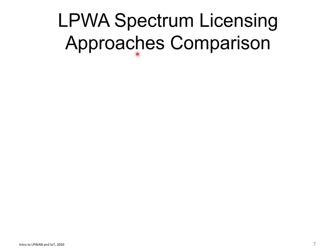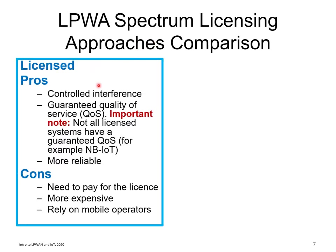What are the main differences between licensed and unlicensed band approaches? For licensed spectrum, the key advantage is controlled interference — interference being the most impeding factor in wireless telecommunications. You have a guaranteed quality of service, for example in LTE. It is more reliable because you have dedicated, exclusive spectrum access. The cons: operators must pay for the license and charge subscribers accordingly. It is more expensive, you must rely on mobile operators, and the gateways and base stations are typically much more costly than the unlicensed equivalent.